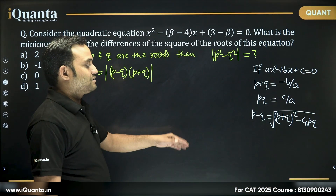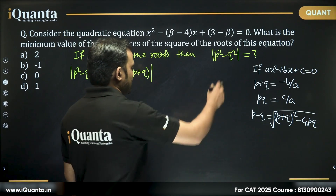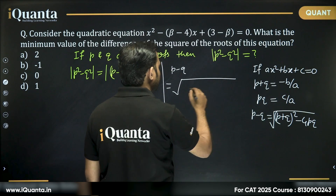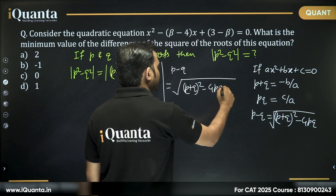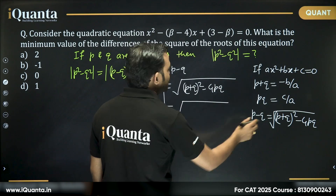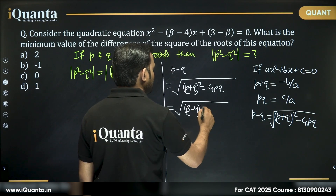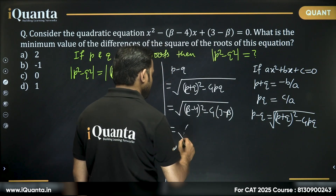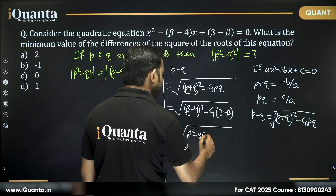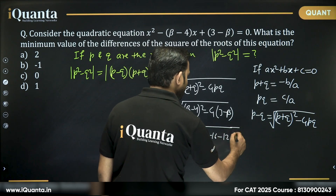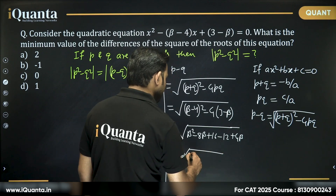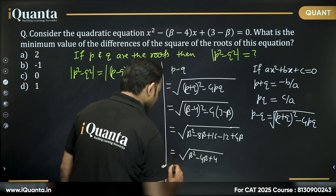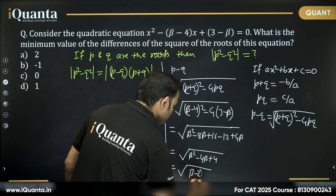To solve this, we need to find p minus q first. p minus q equals √[(p+q)² − 4pq] = √[(β−4)² − 4(3−β)] = √[β² − 8β + 16 − 12 + 4β] = √[β² − 4β + 4].